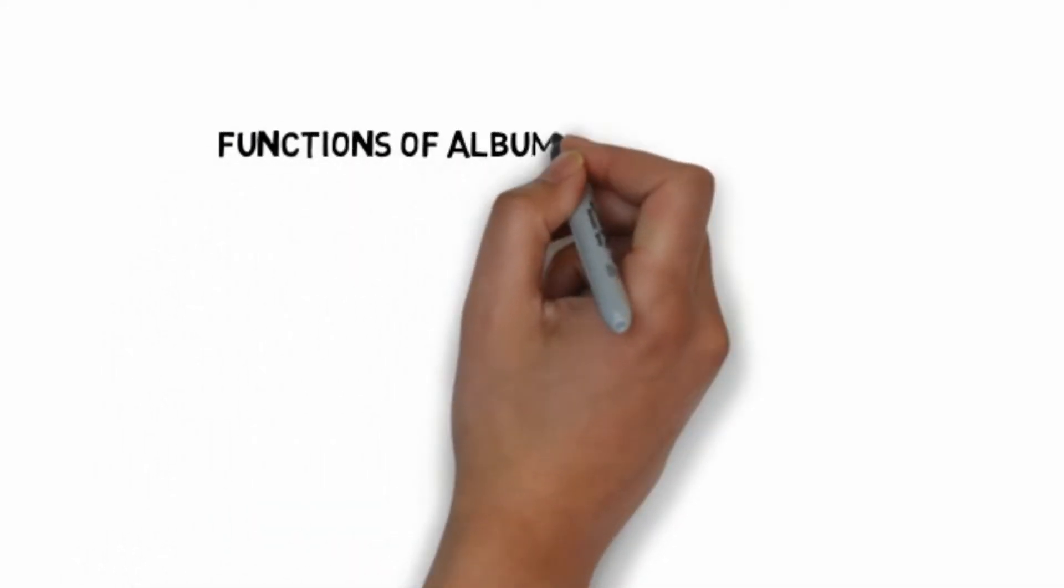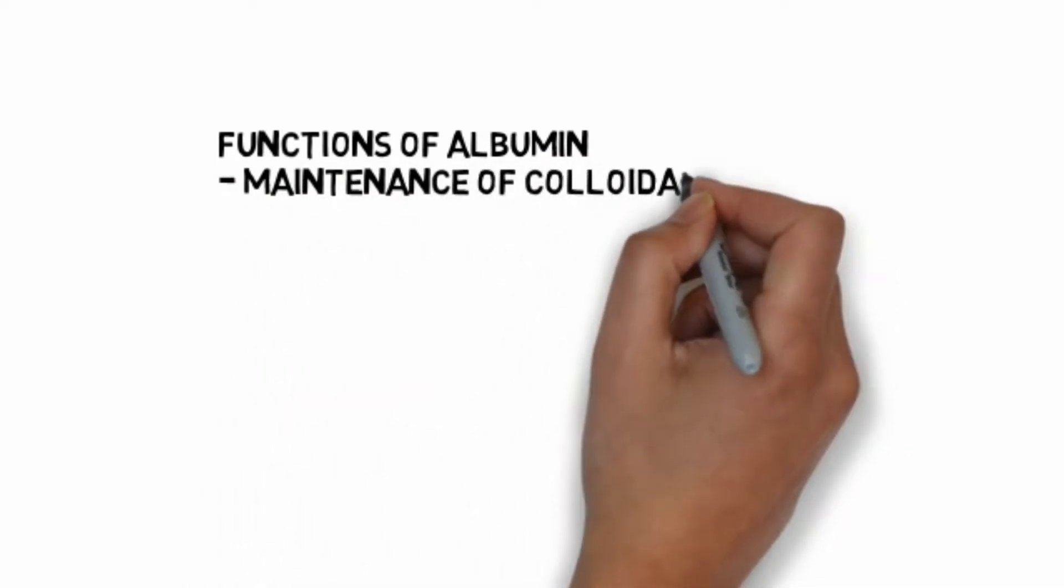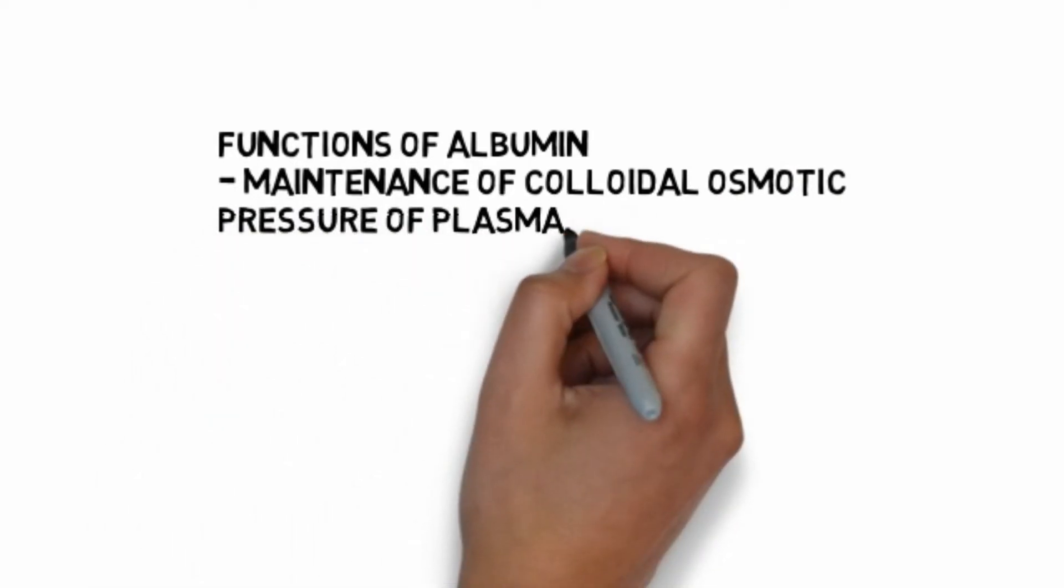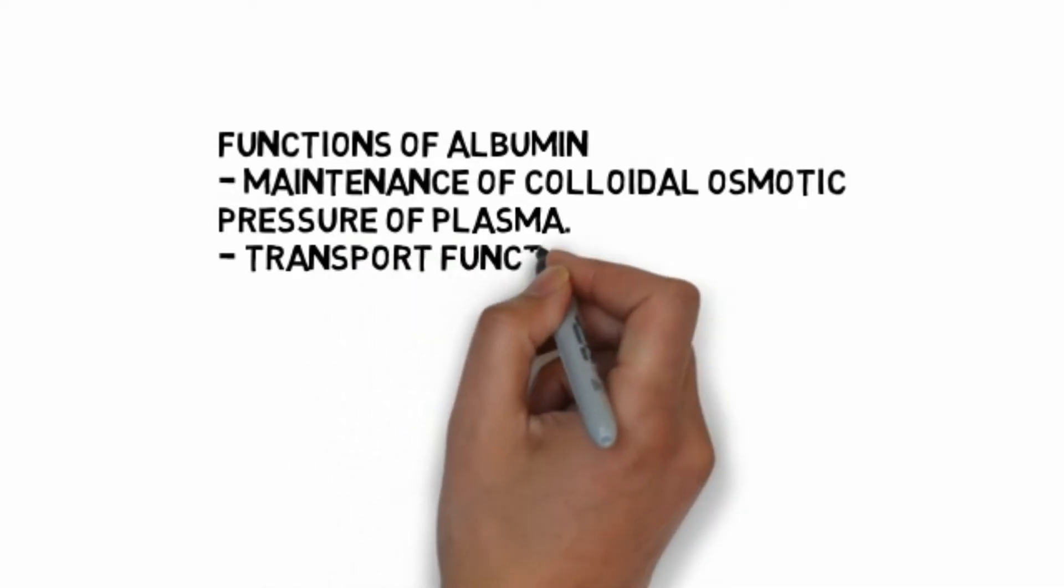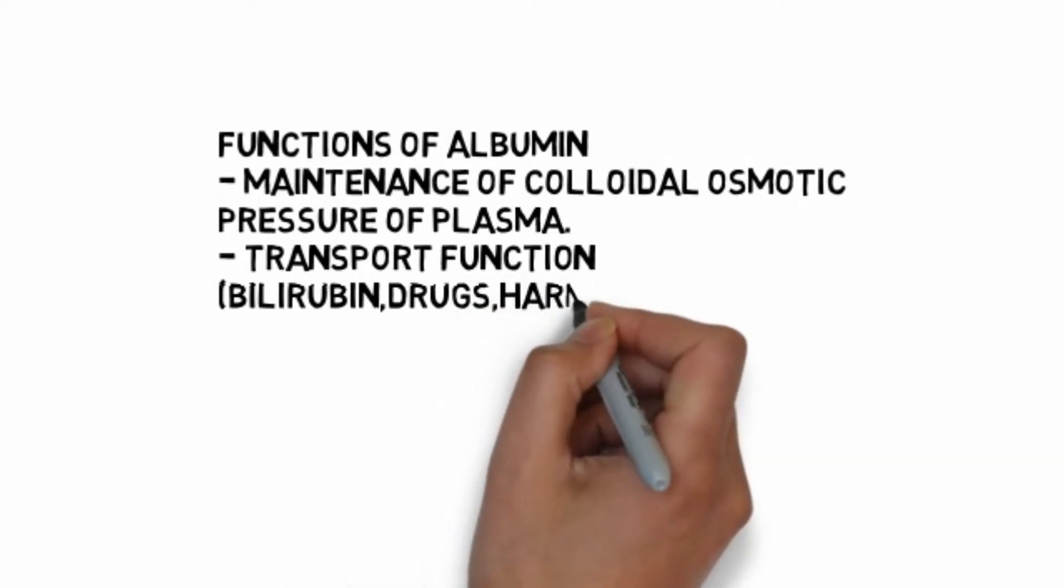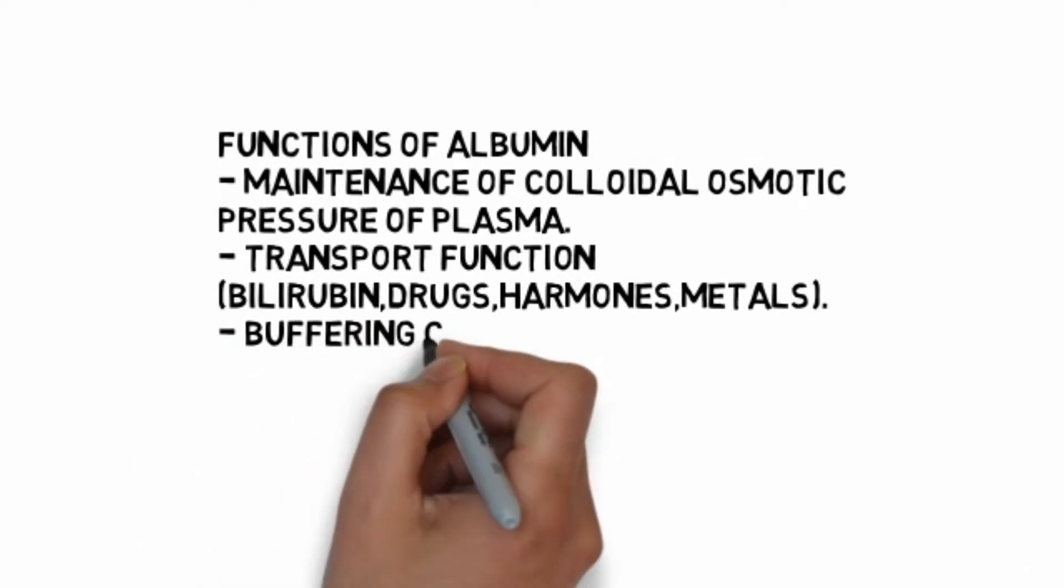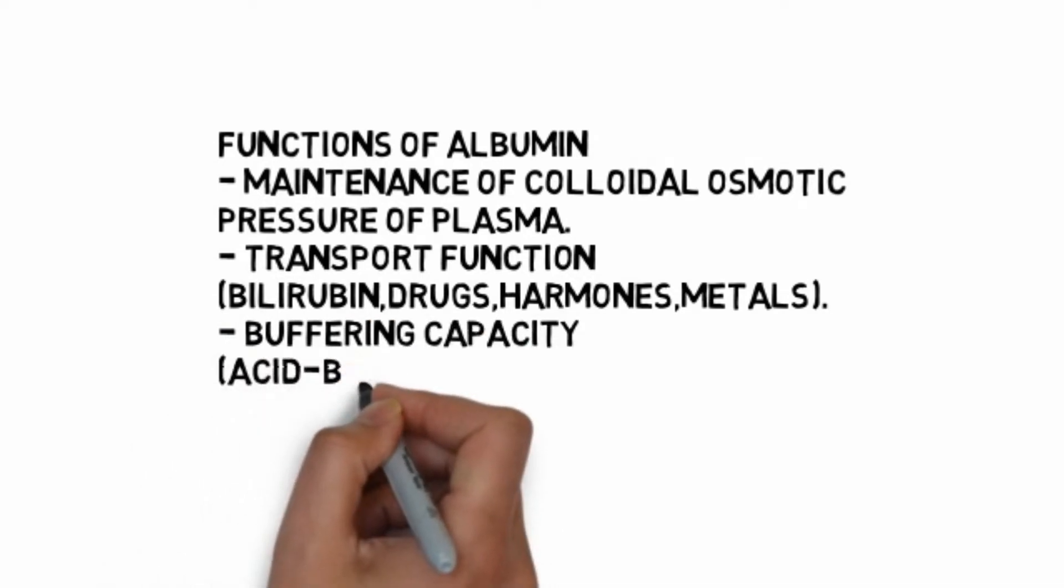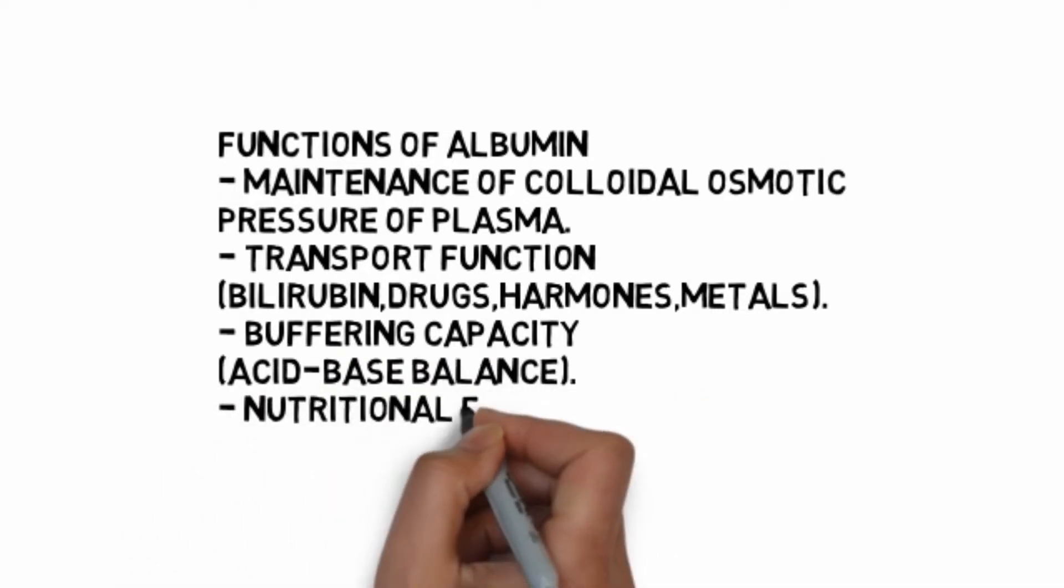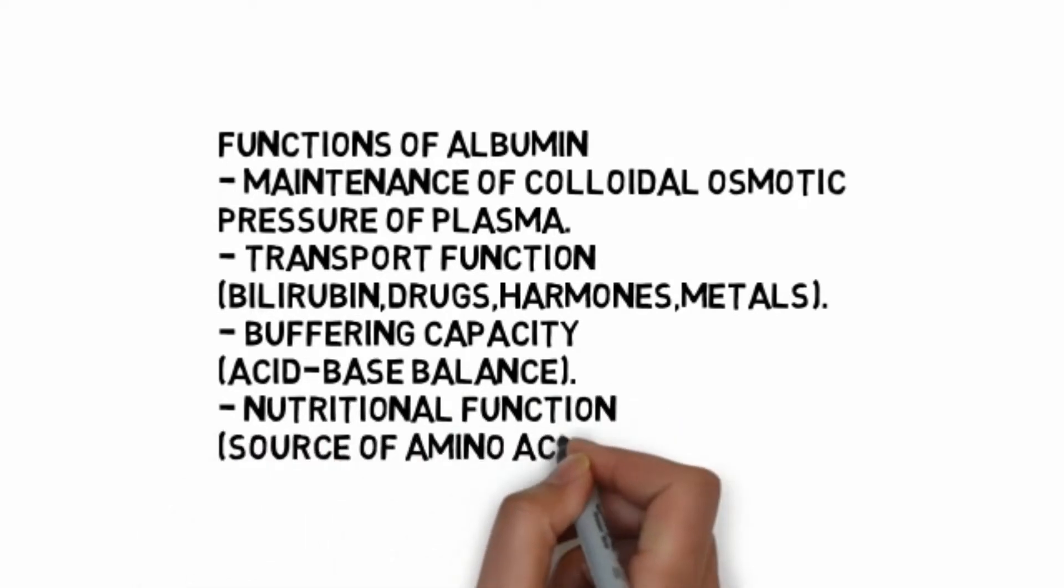Functions of albumin: helps in maintenance of colloidal osmotic pressure of plasma, transport function by transporting substances like bilirubin, drugs, hormones, and metals such as sulfa and aspirin. Albumin provides buffering capacity, helping maintain acid-base balance. Albumin also has nutritional function, acting as a source of amino acids especially during starvation.